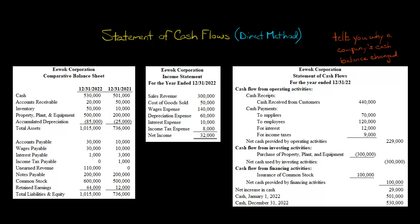Let's take this EWOC Corporation. If we want to know how much cash the company had at the most recent balance sheet date, December 31st, 2022, we look and see they have $530,000 of cash, and the prior year they had $501,000. So cash went up by $29,000. But why did it go up? Did it go up because the company is borrowing a lot of money, or because it's generating a lot of cash from operations? That's what the statement of cash flows is all about, and that doesn't change whether you use the direct or indirect method.